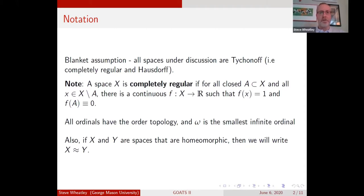A few other notational things. We use ordinals, so all ordinals have the order topology. Omega is the smallest infinite ordinal, the natural numbers. The order topology on that is just the discrete topology. We could think of omega as the naturals or just as some sequence without any limit point attached. If we got two spaces that are homeomorphic, we'll use approximately equals to indicate that.